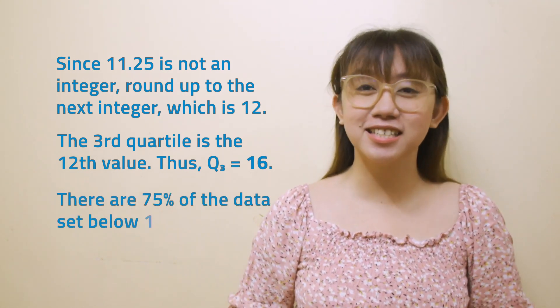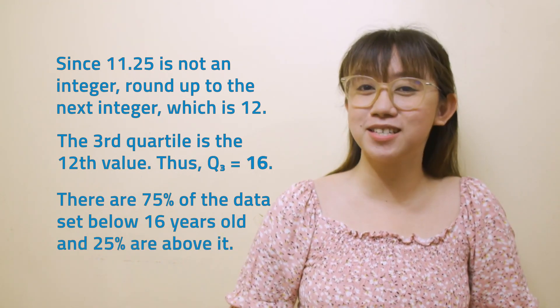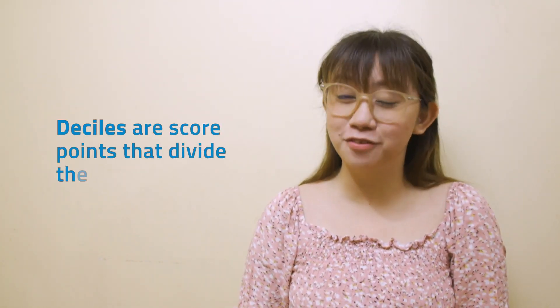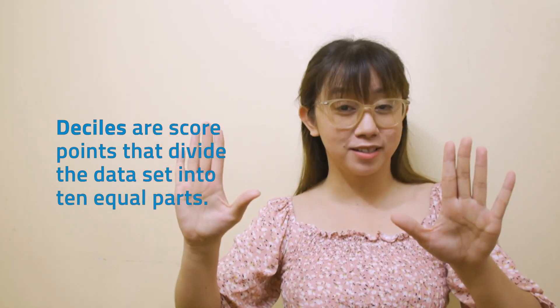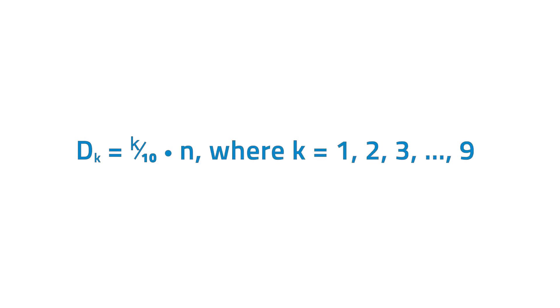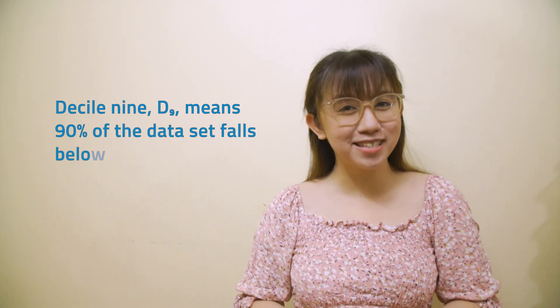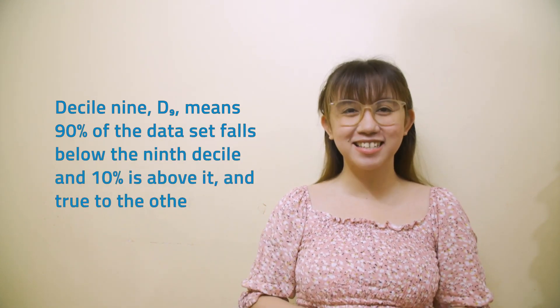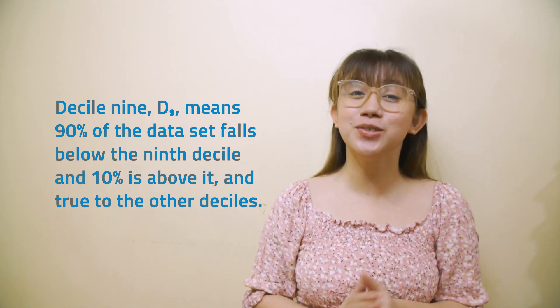Let's talk about deciles next. Deciles are score points that divide the data set into 10 equal parts. There are 9 deciles: D1, D2, D3, and so on until D9. Decile 1, D1, means 10% of the data set falls less than or equal to the first decile and 90% is above it. Decile 9, D9, means 90% of the data set falls below the 9th decile and 10% is above it, and true to the other deciles.